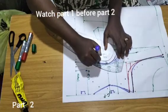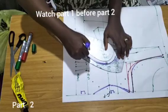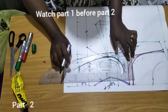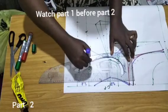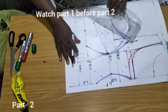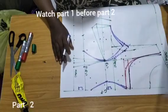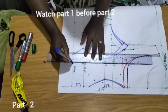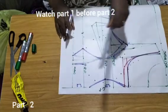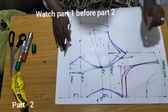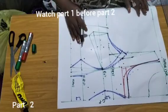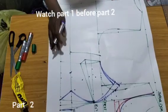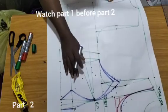I'll come in with my pattern ruler and continue this curve. You have to match these points to the bust point. Next, connect what I have from here to here. That's the upper body pattern. Next I'll cut and add my seam allowance.